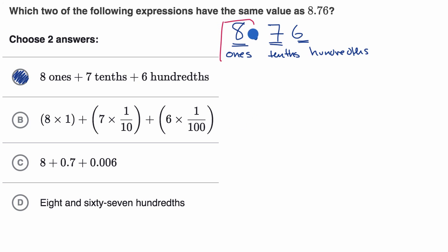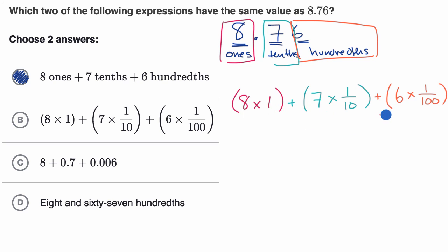So eight ones, that's the same thing as eight times one. And to that, we would add seven tenths. So that's plus seven times one tenth. Plus, and I'll do this in this orange color, six hundredths. So that's plus six times a hundredth. Six hundredths. So this would be this number in expanded form.